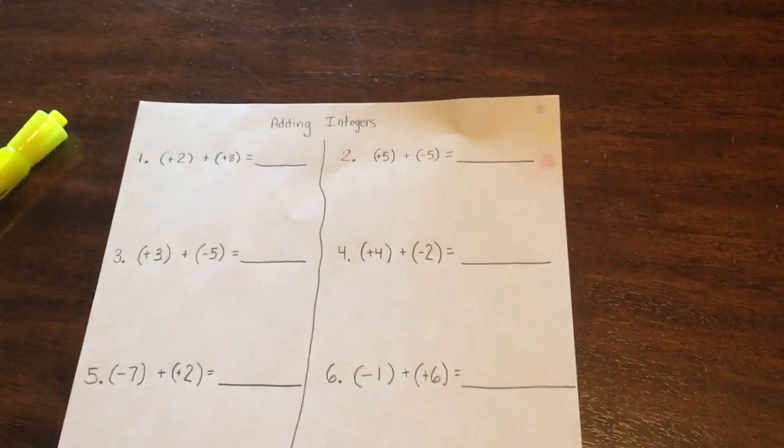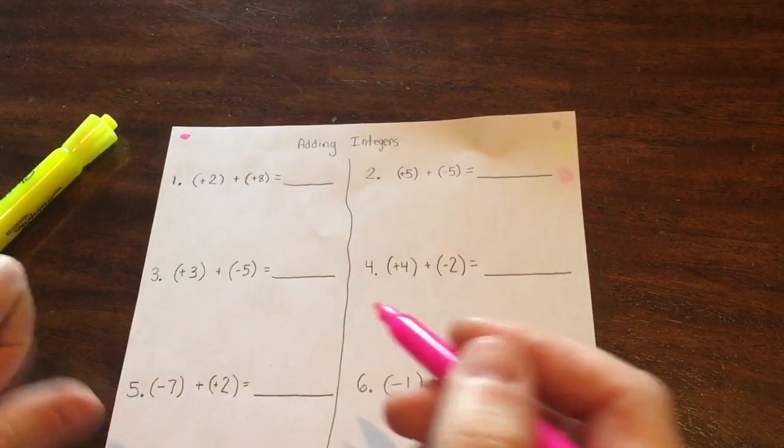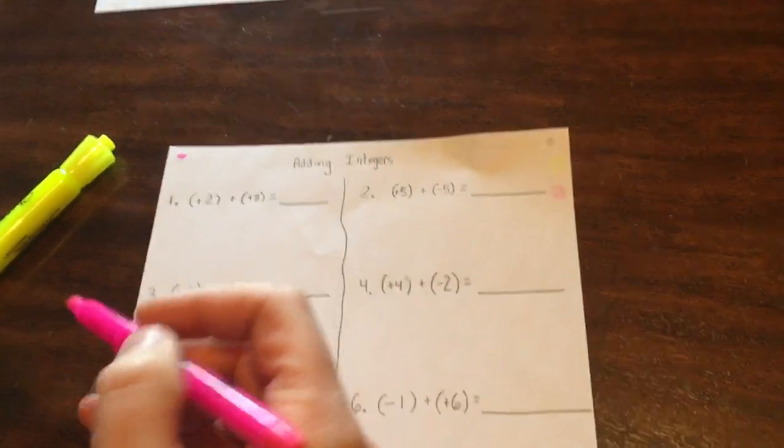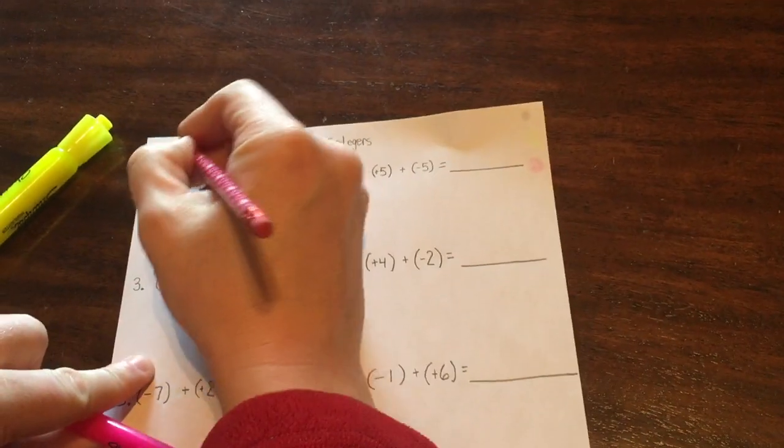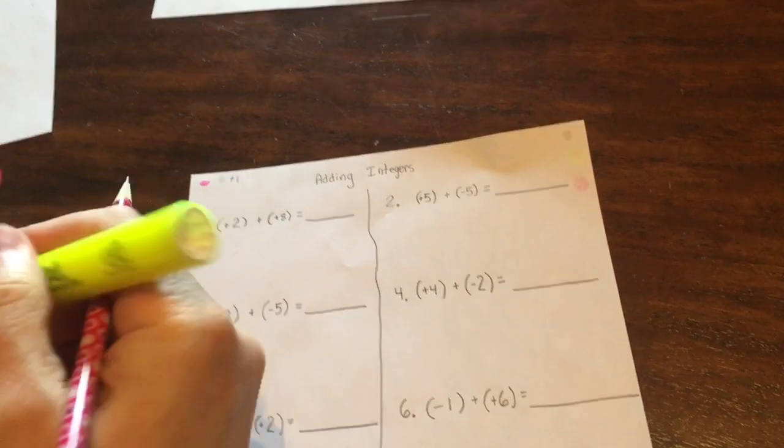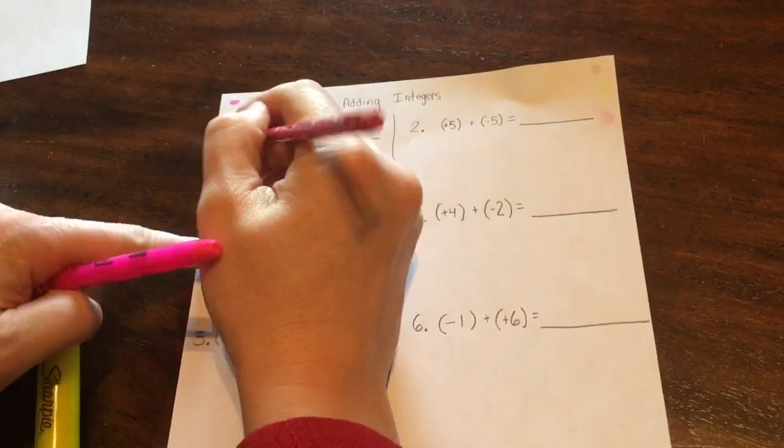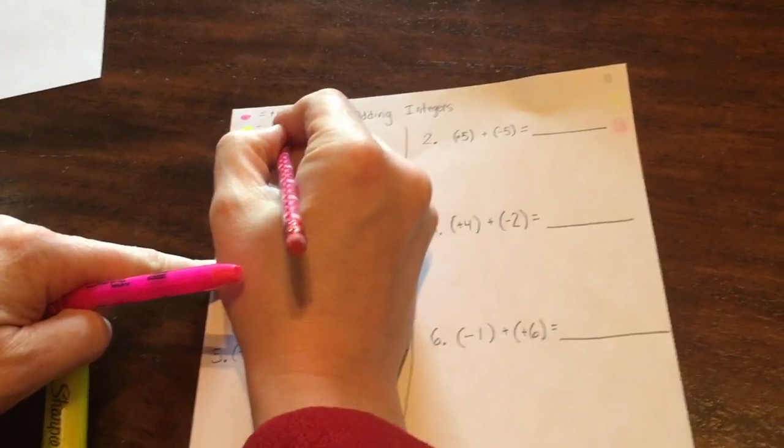Okay, so today we're going to add integers with zero pairs. The pink will be positive one and yellow will be negative one.